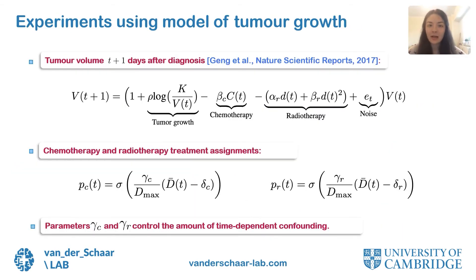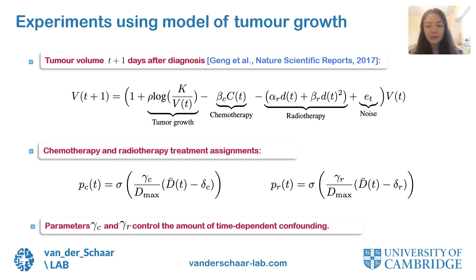In real data sets, counterfactual outcomes and the degree of time-dependent confounding are not known. To validate the counterfactual recurrent network, we evaluate it on a pharmacokinetic pharmacodynamic model of tumor growth, which uses a state-of-the-art biomathematical model to simulate the combined effects of chemotherapy and radiotherapy in lung cancer patients. This simulation setup allows us to vary the degree of time-dependent confounding and evaluate the robustness of the causal inference methods. Time-varying confounding is introduced by modeling treatment assignments as random variables that depend on the history of tumor diameter, and the parameters gamma_c and gamma_r control the degree of confounding bias.